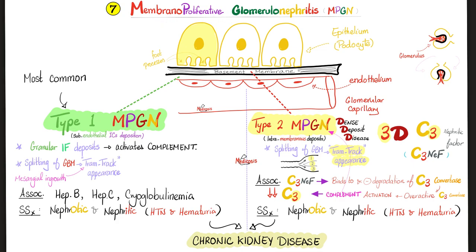How about membranoproliferative? Type 1 versus type 2 — subendothelial versus intramembranous. Either one can split the glomerular basement membrane, giving you the tram track appearance under the microscope. Associated with Hep B, Hep C, cryoglobulinemia, and C3 nephritic factor. What does C3 nephritic factor do? It binds to and inhibits the degradation of C3 convertase. If you're not degrading it, C3 convertase persists, stays around, and becomes overactive.